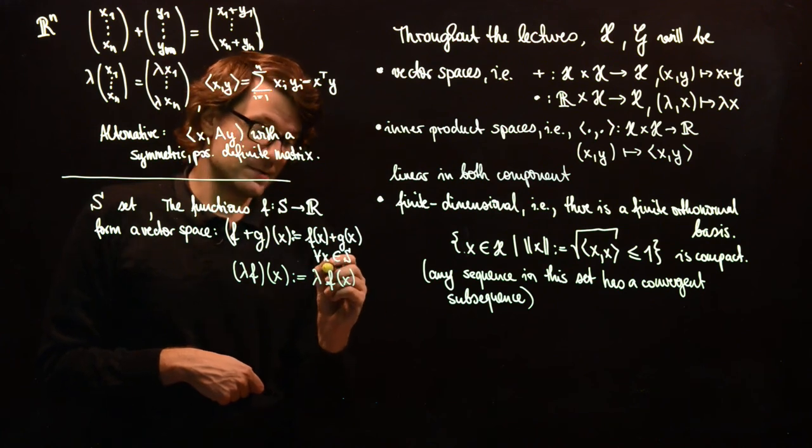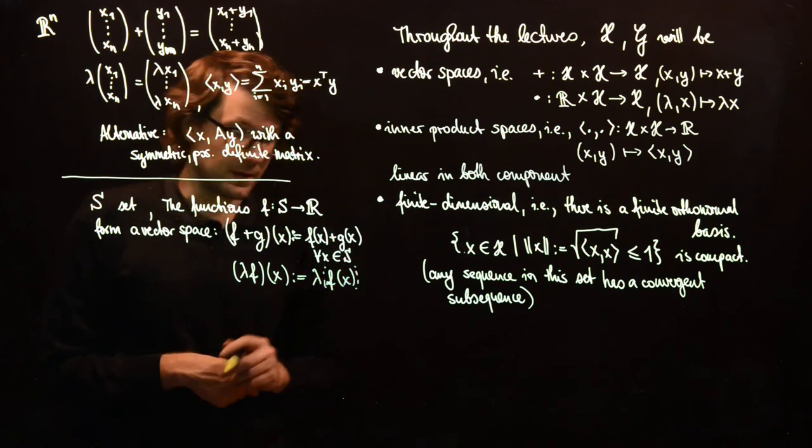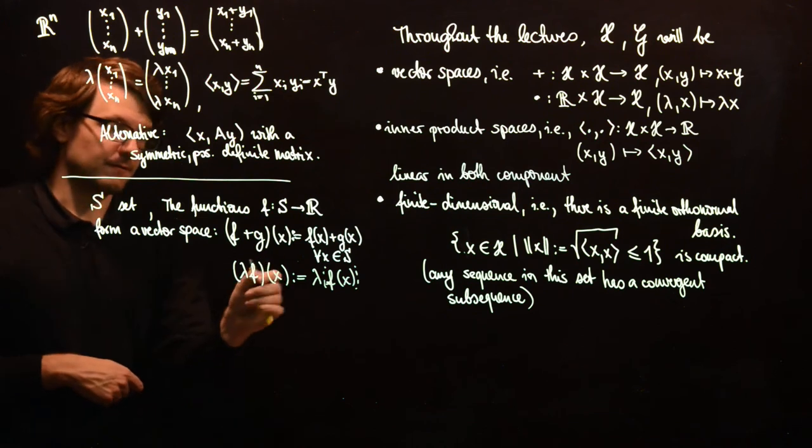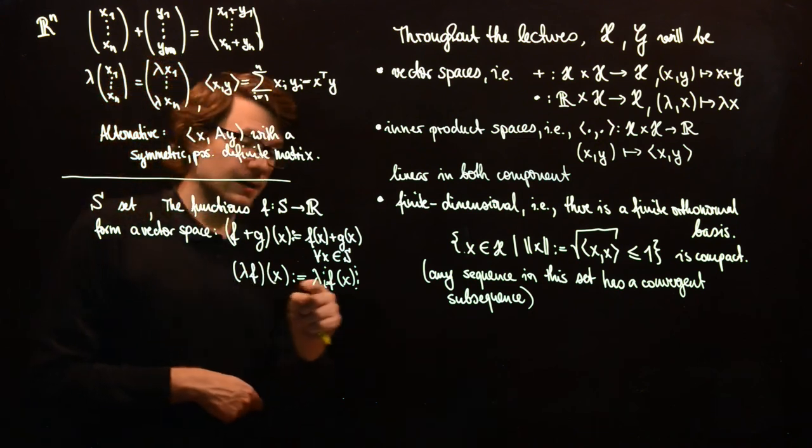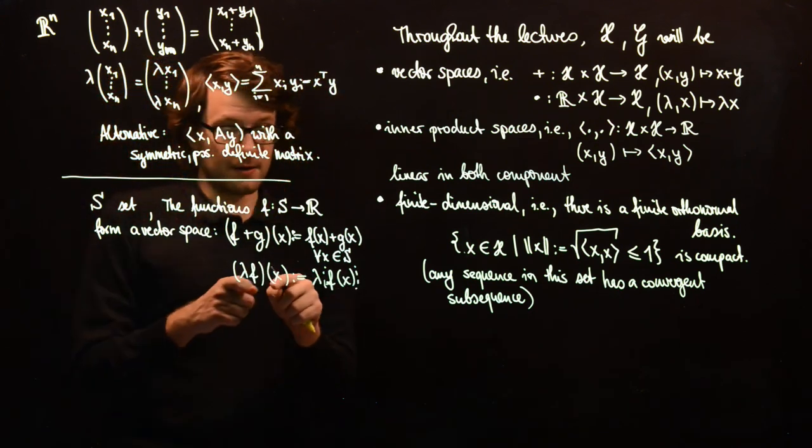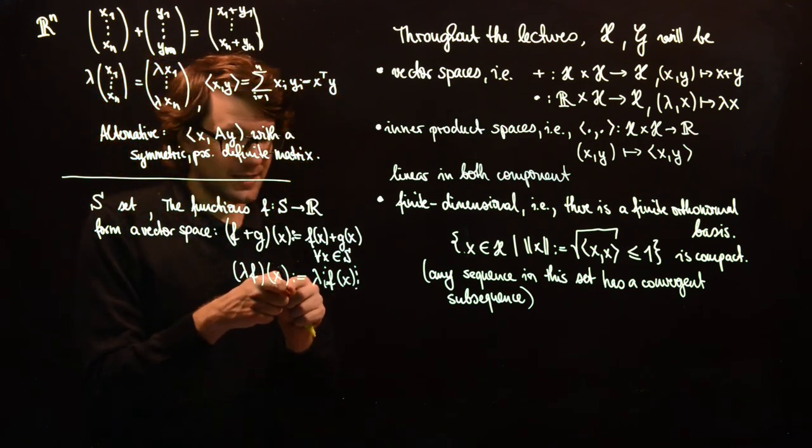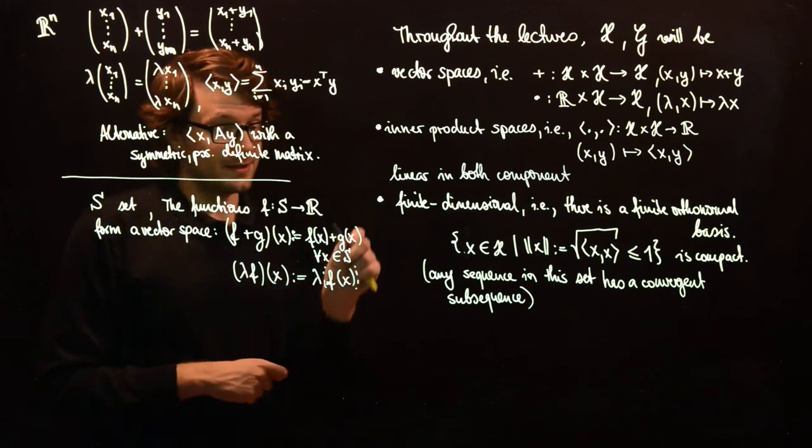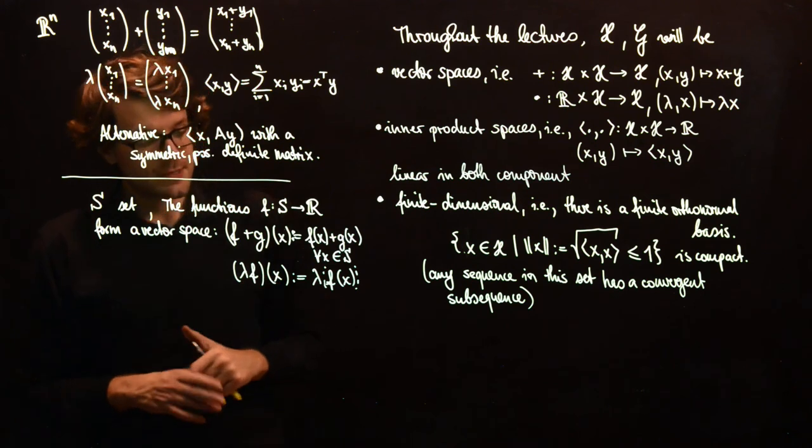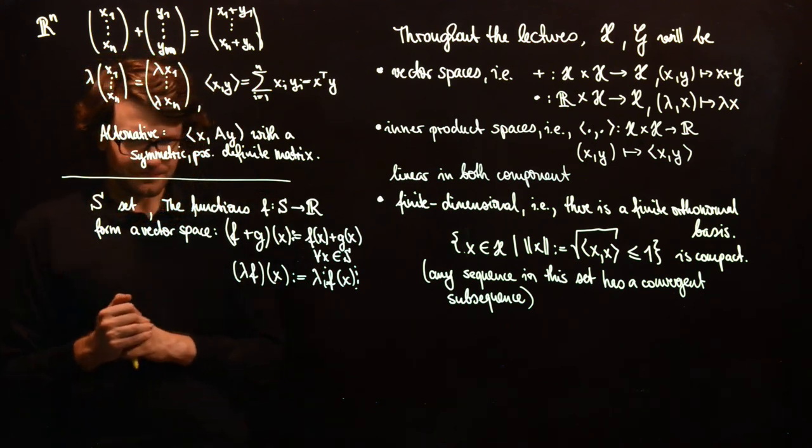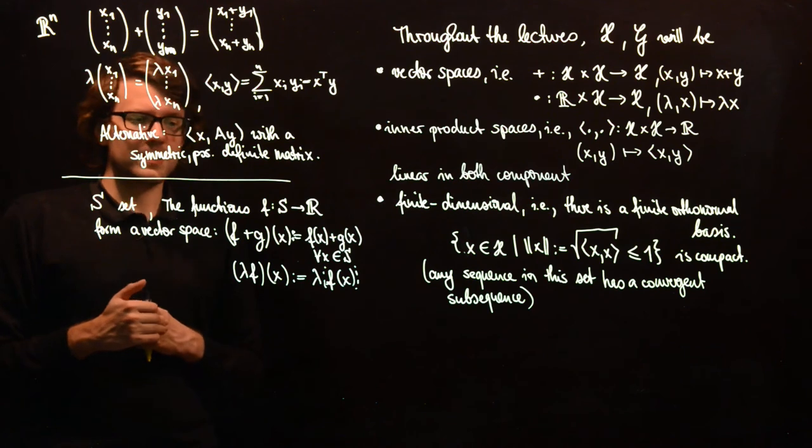And you can scale a function with this, so you can multiply a function with the scalar lambda. This is also a new function which you can evaluate at a point, and the result will be lambda times F applied to X. So actually if you want to set parentheses, then the parentheses belong here. So this is the definition of the product of a function with a scalar. You evaluate this at the point X, and as a result you get the evaluation of F at the point multiplied with lambda.